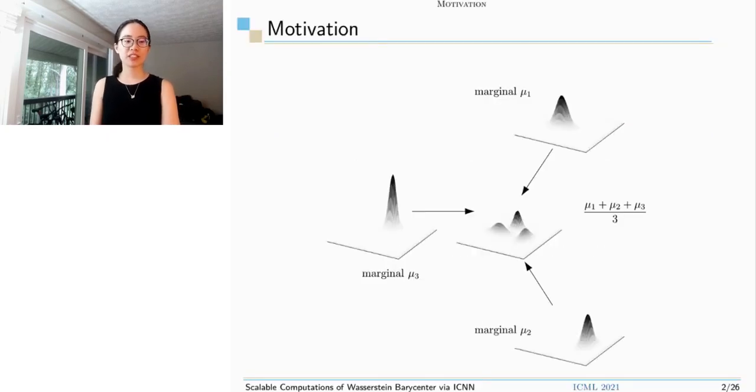Our motivation is to average several marginal distributions. However, what is a good metric? Here is a simple example. There are three different Gaussian marginal distributions. Those small hills represent their probability density, mu1, mu2, and mu3.